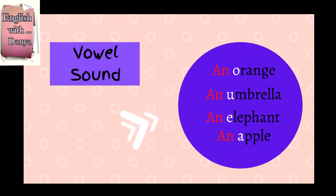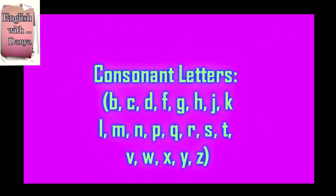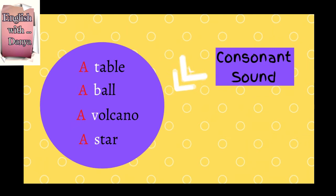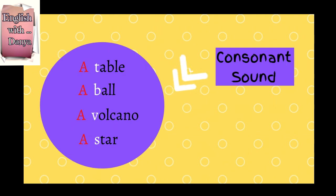Now let's move to consonant sounds. We follow the same rule: look at the first letter of the word as well as its sound. 'Table' — the first letter is T, it is a consonant, so we say 'a table'. 'Ball' — first letter B, so 'a ball'. 'Volcano' — first letter V, so 'a volcano'. And 'star' — first letter S, so 'a star'.